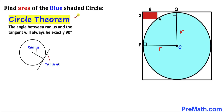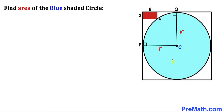Now let's recall the circle theorem. According to this theorem, the angle between the radius and the tangent will always be exactly 90 degrees. So the angles at both tangent points P and Q are going to be 90 degrees. Our task is to find the value of radius r in order to find the area of this blue circle.